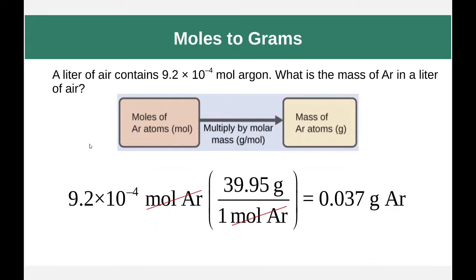Let's go from moles back to mass. A liter of air contains 9.2 times 10 to the negative 4 moles of argon. What is the mass of argon in a liter of air? Starting with moles, we put one mole in the denominator. The atomic mass of argon is 39.95 grams per mole. We put that in grams in the numerator, cancel our moles, and see that this many moles of argon weighs 0.0374 grams.